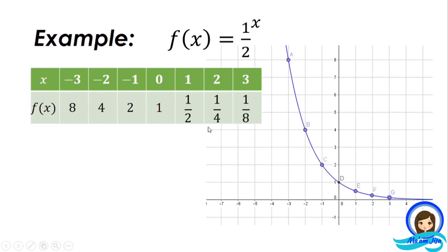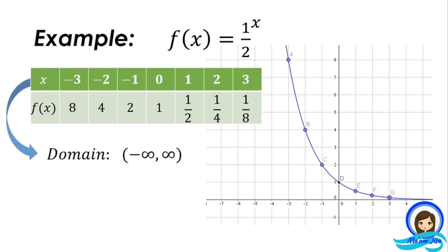The ordered pairs from the table are plotted on the graph. At point A we have (−3, 8), at point B is (−2, 4), at point C is (−1, 2), and at point D is (0, 1) where the graph crosses the y-axis. At point E is (1, 1/2), at point F is (2, 1/4), and at point G is (3, 1/8). As x becomes larger, y becomes smaller, and the graph approaches y equals 0. Therefore, the domain is the set of all real numbers, while the range is from 0 to positive infinity.